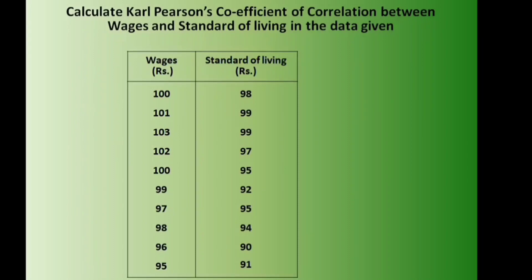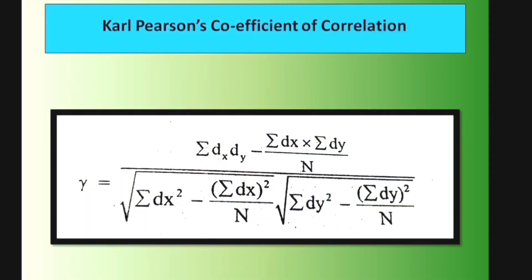The Karl Pearson's Coefficient of Correlation formula is: r = [Σdx·dy − (Σdx·Σdy)/n] divided by √[Σdx² − (Σdx)²/n] × √[Σdy² − (Σdy)²/n].